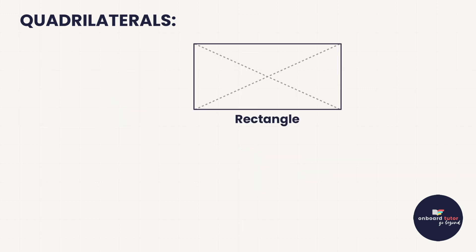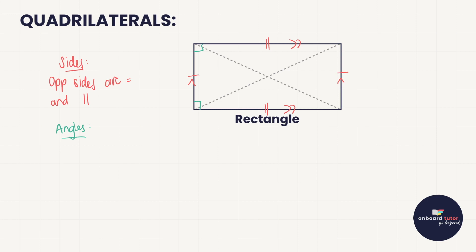The next quadrilateral we need to know is the rectangle — one we've seen a lot, learned about in preschool already. What do we know about the sides? Opposite sides are equal and parallel — this one is equal to this one and parallel, and this one here is equal to this one here and parallel. Then the angles: all angles in a rectangle are 90 degrees, so it's a special parallelogram.